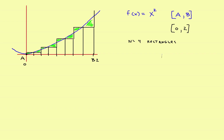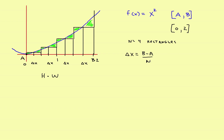Now let's put some specific points on here. We will divide this into four equal-sized rectangles. It comes down to: you want the height times the width of each rectangle. To find the width, the width of each rectangle — delta x — is just the width of the interval, which would be b minus a divided by the number of rectangles, which is n.